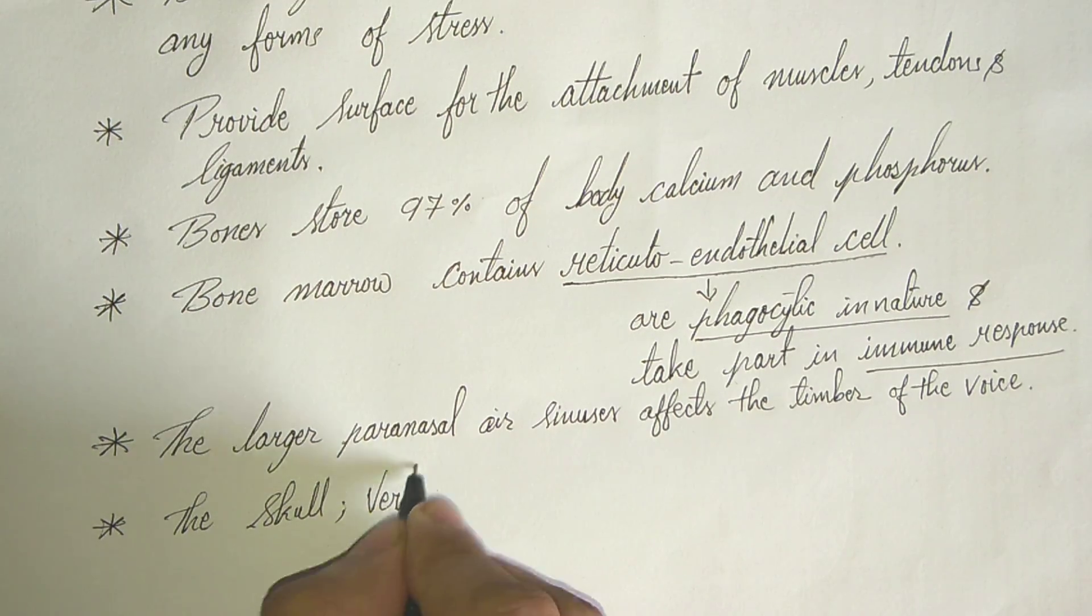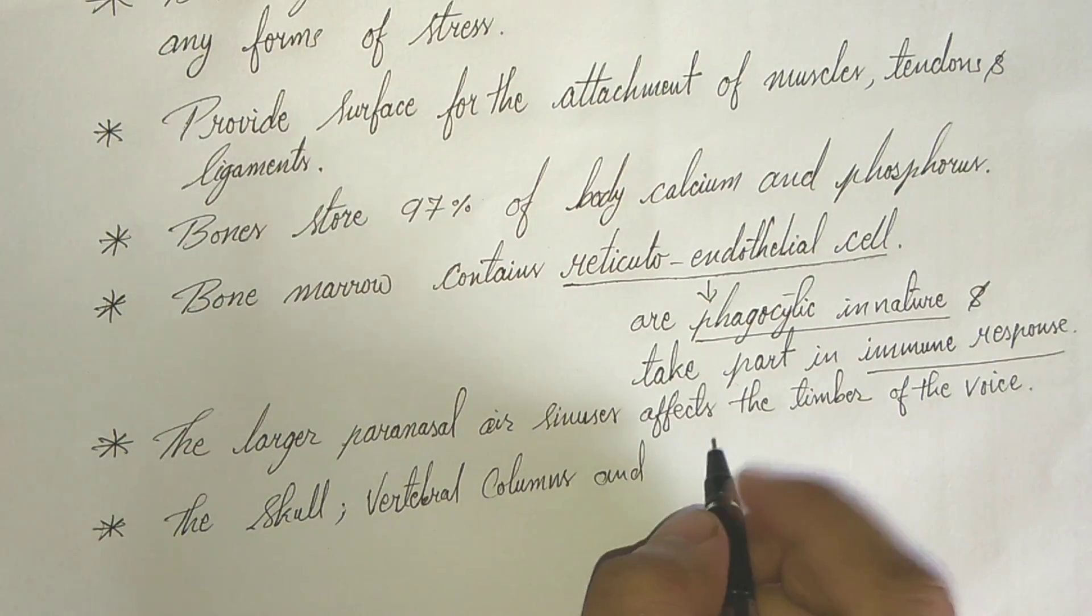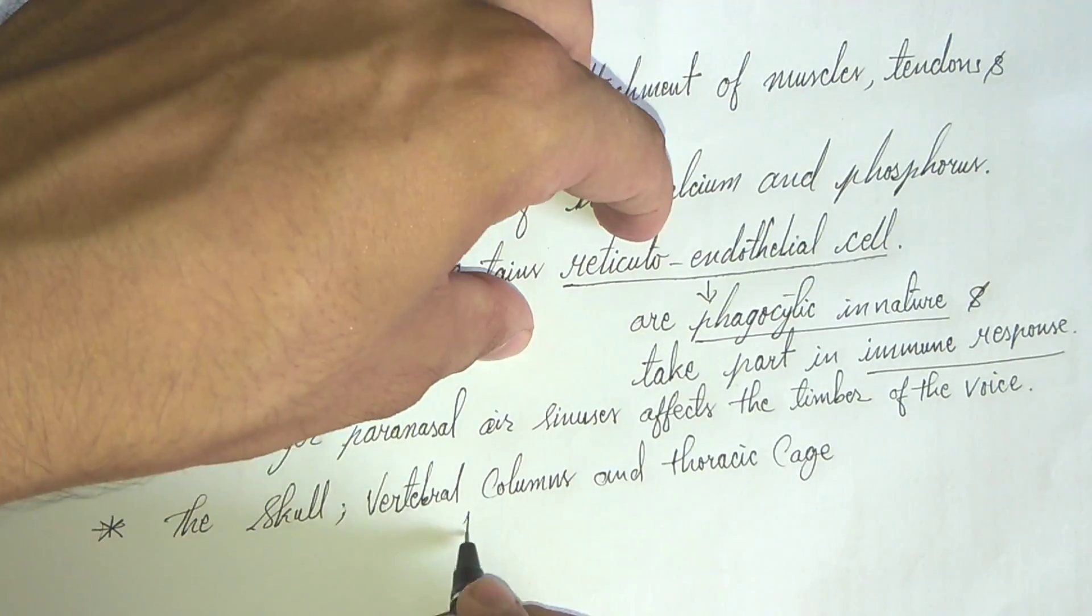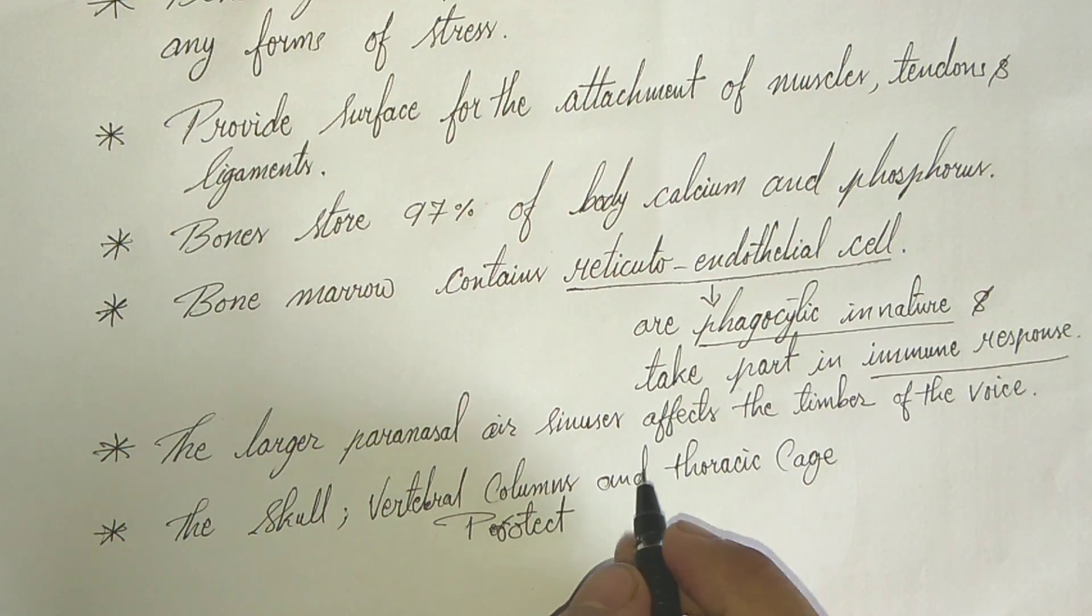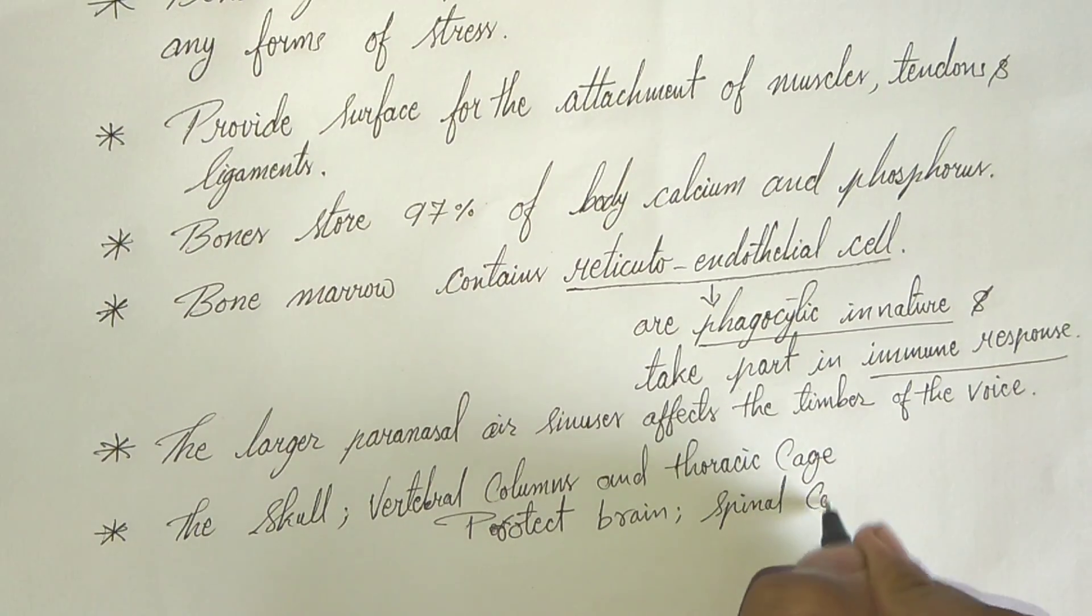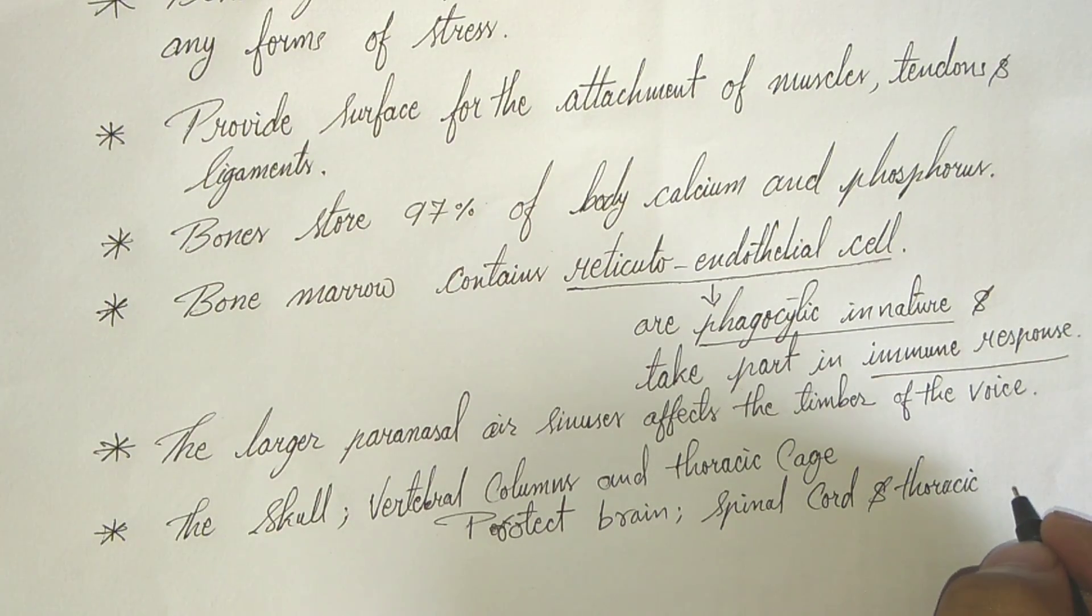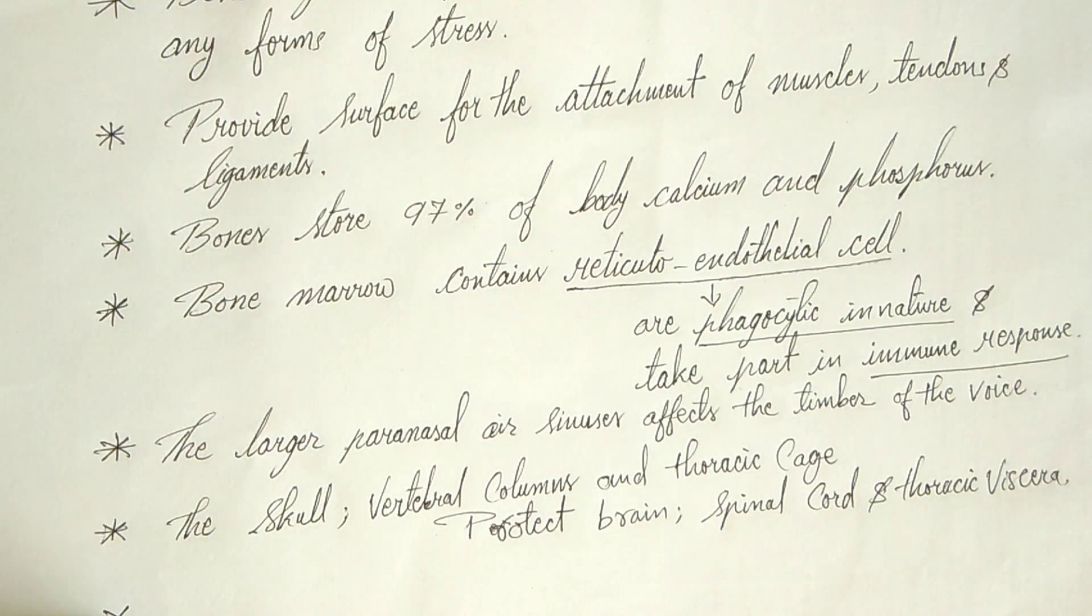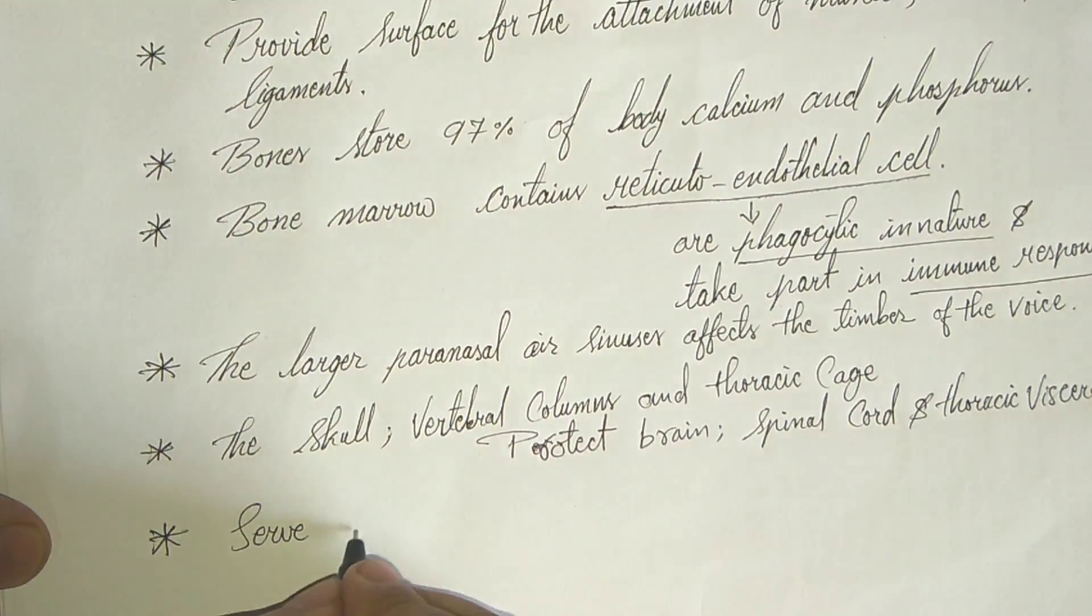Now come to the sixth function of bone: skull, vertebral column and the thorax. So this thoracic cage. All this skull, vertebral column and thoracic cage protect the brain. Skull protects the brain, vertebral column protects the spinal cord and thoracic cage protects the thoracic viscera. So this completes the sixth function of bone.